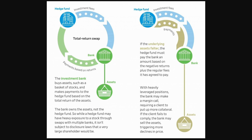When you think about the Archegos case, it's a great example of how total return swaps can be manipulated. This family office — run by Bill Huang — had billions of dollars in positions. All of it was through total return swaps. They were able to present that they had value in securities they didn't actually own, and they used those as collateral across multiple different banks, taking on massive amounts of leverage. Because total return swaps don't have the same disclosure rules when it comes to being reported on the books, this was, for the most part, hidden from public view.